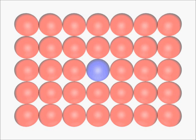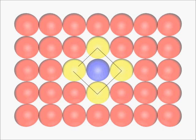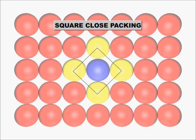Here a single sphere touches four other spheres. If we join the centers of the spheres, we get a square. Therefore this packing is called square close packing.